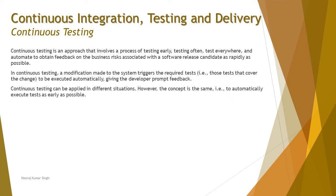In continuous testing, a modification made to the system triggers the required tests — those tests that cover the change — which are then executed automatically, giving the developer prompt feedback if there is anything that needs to be done at that point. Continuous testing can be applied in different situations; however, the concept remains the same: to automatically execute tests as early as possible.